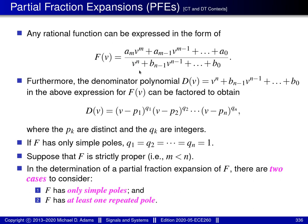Furthermore, through factorization, the denominator polynomial d of f can always be expressed in this particular form here, where the pk are distinct complex constants and the qk are positive integers. The pk denote the poles of f, and the qk denote their respective orders. If f only has simple poles, then q1, q2, and so on up to qn are all equal to 1. Suppose now that f is strictly proper — that is, m is less than n. Then f has a partial fraction expansion. The general form of this expansion depends on the order of the poles of f. In particular, there are two cases to consider: the first case is that f has only simple poles, and the second case is that f has at least one repeated pole.